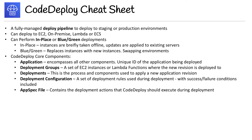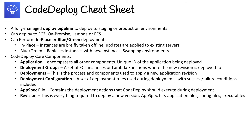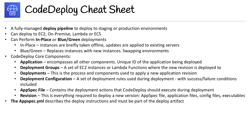We have our AppSpec YAML file, which is super important to know — it contains the deployment actions that CodeDeploy should execute during the deployment. Then you have Revisions: this is everything required to deploy a new version — your AppSpec file, application files, config files, and executables.